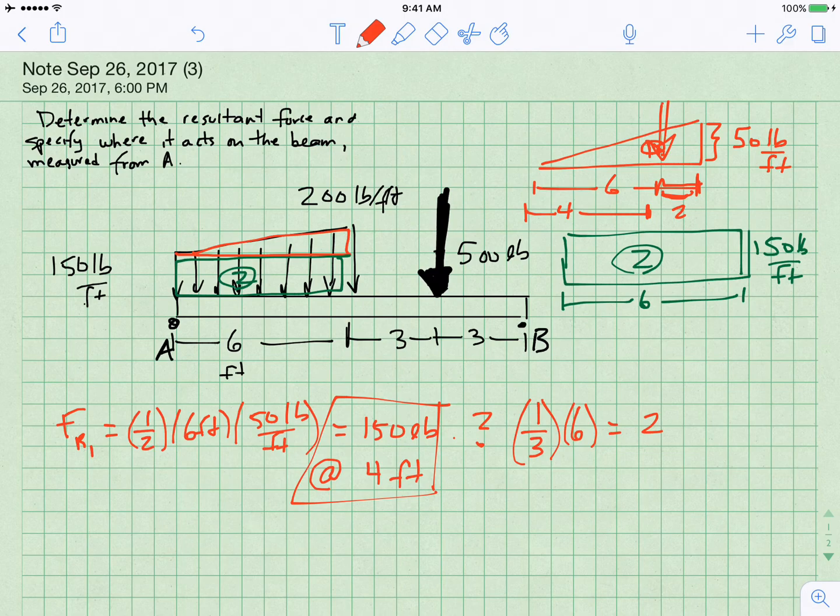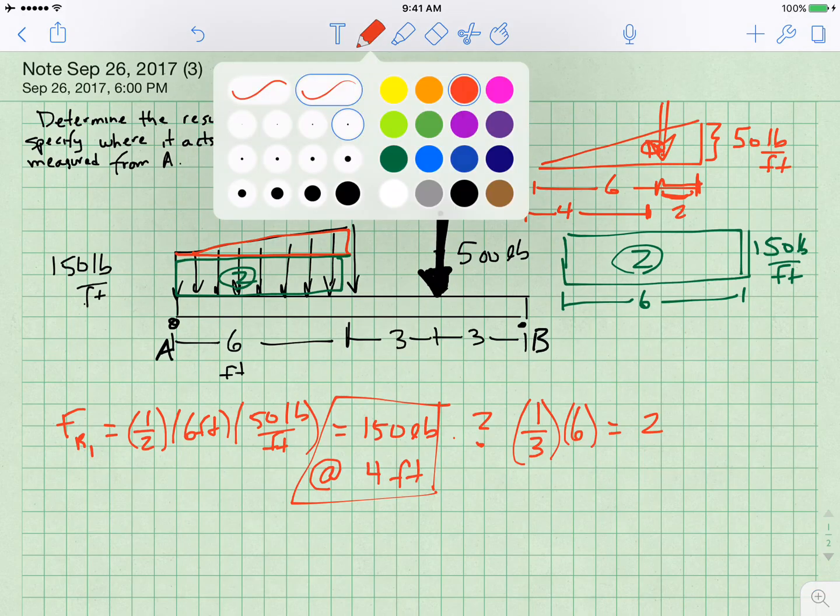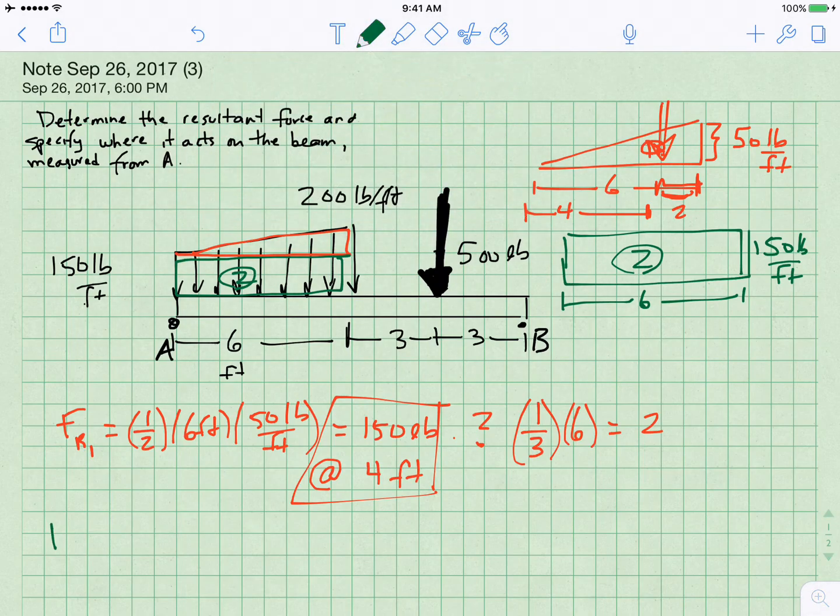So F1 is that 150 pounds at four feet. In other words, if I get rid of that triangle, that red triangle, I could just add a single load there located at four feet of 150 pounds. So let's go on and work on the calculation for the resultant force from area two.